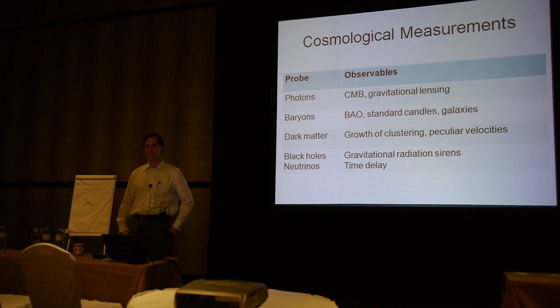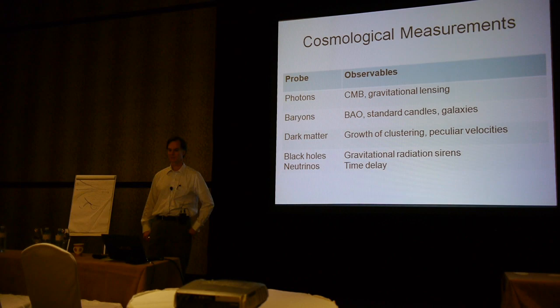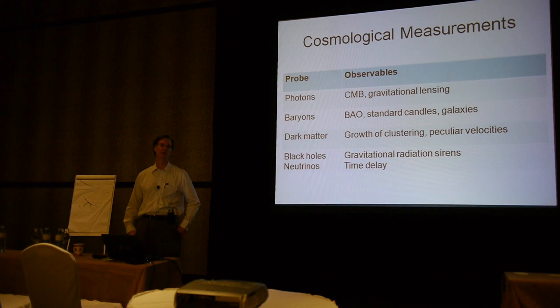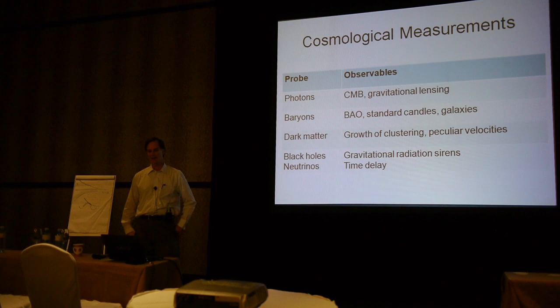Dark matter itself, were it visible directly, would be a very powerful probe by giving us direct information about the growth of clustering and peculiar velocities. We try to determine those by observing galaxies and correcting for the so-called bias of galaxy formation—mainly that galaxies tend to be more concentrated than the dark matter around them.